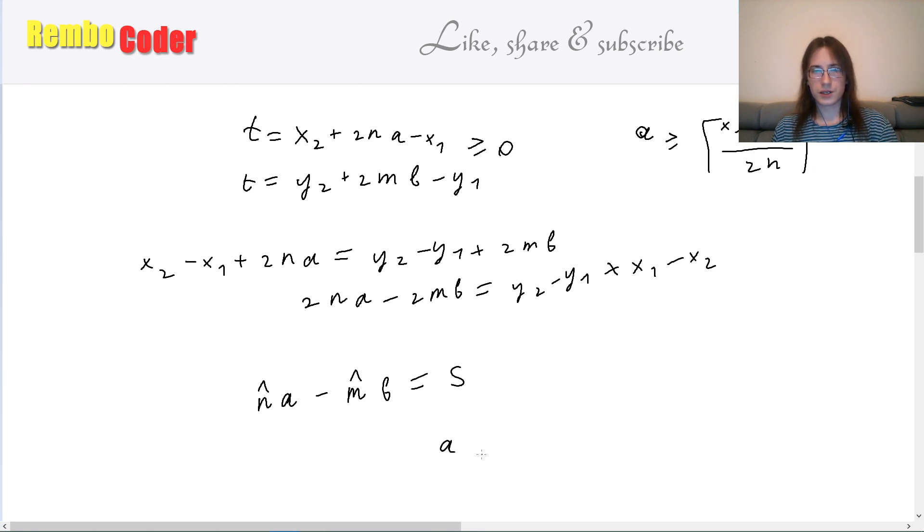So we know that the solution to this equation has such form. It's some base solution a0, b0, but shifted k times by this shift, where k is an arbitrary integer number which can be negative. And n circumflex prime, m circumflex prime are n circumflex and m circumflex if you divide them both by the greatest common divisor. So let's insert this expression to this inequality to find the inequality for k. And we'll get a0 plus m circumflex prime k. It's larger or equal than this expression.